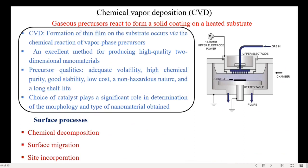The next one is chemical vapor deposition, CVD. In this method, gaseous precursors react to form a solid coating on a heated substrate. In CVD, the formation of a thin film on the substrate occurs via the chemical reaction of vapor phase precursors.